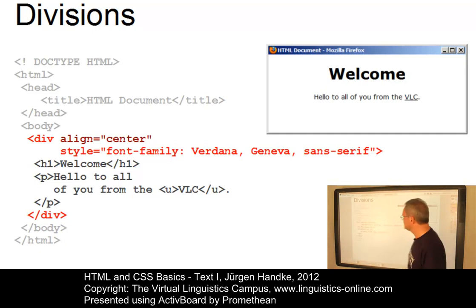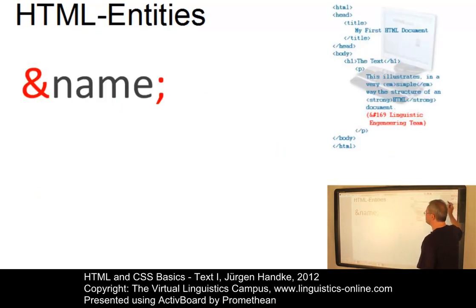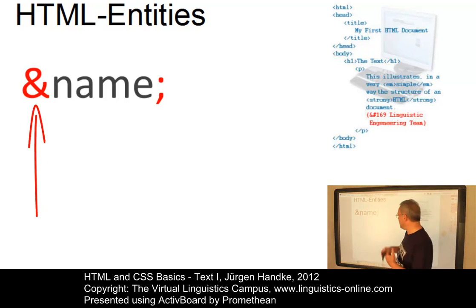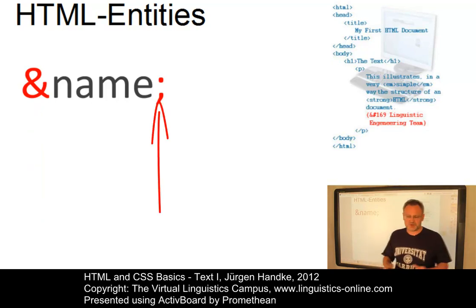Let's finally look at special entities. Now, HTML provides a method of entering characters that cannot be expressed in the document's character encoding or that cannot easily be entered on a keyboard. These character entity references, or entities for short, are case sensitive and take the form: ampersand, then the name, and then a semicolon. And there are no spaces between them.